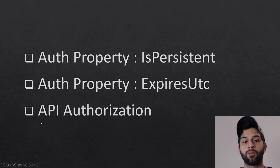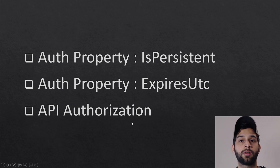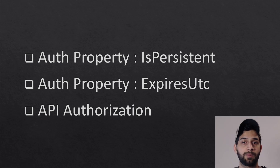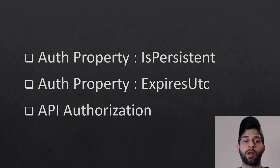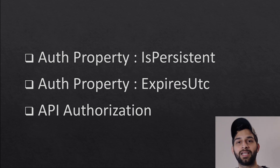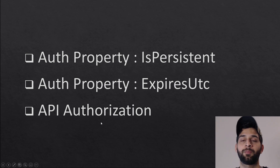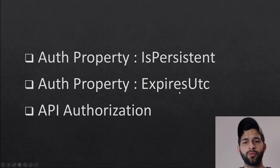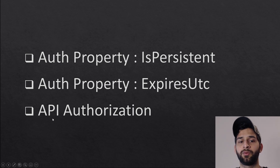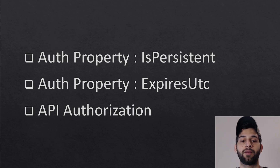We'll also check out API authorization. Currently our Blazing Chat application's API is open to the public, and what I want to do is whenever there isn't any cookie on the client browser, I'd like to protect my APIs on the server side. So whenever the cookie expires, we want to redirect the user to the login page and log them out so they don't have access to the application.